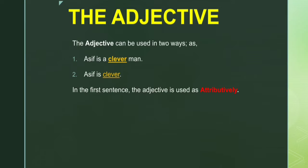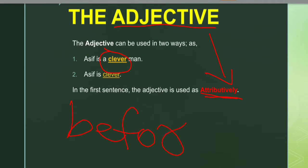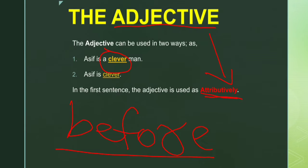In the first sentence, the adjective is used attributively. 'Asif is a clever man' — 'man' is the attribute of 'clever.' That is why it is used attributively. In simple words, when an adjective is used attributively, it always comes before a noun. This will be called the attributive use of the adjective.